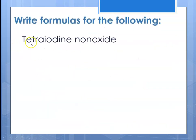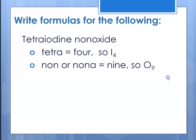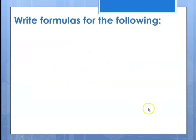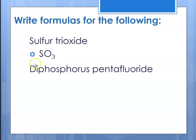To write formulas: tetraiodine nonaoxide — tetra is 4 and nona is 9, so tetra equals 4 giving I4, nona equals 9 giving O9, so put it all together and you have I4O9. For sulfur trioxide, tri is 3 and there's no prefix for sulfur so there's only 1, giving SO3. For diphosphorus pentafluoride, di means 2 and penta means 5, so P2F5. Remember that the prefixes are attached to the appropriate element.